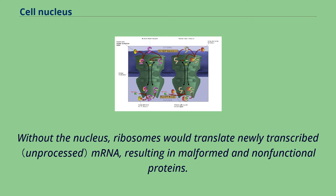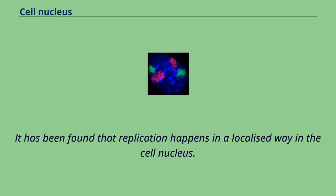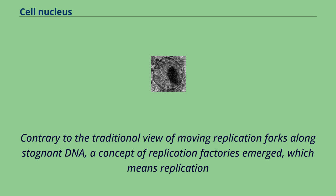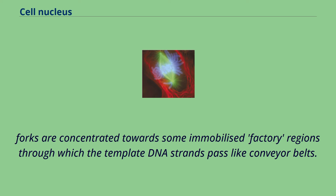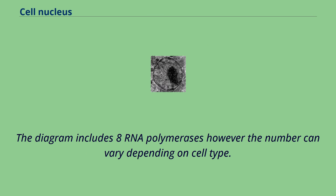The main function of the cell nucleus is to control gene expression and mediate the replication of DNA during the cell cycle. Replication happens in a localized way in the cell nucleus. In the S phase of interphase, replication takes place. Contrary to the traditional view of moving replication forks along stagnant DNA, a concept of replication factories emerged, in which replication forks are concentrated towards some immobilized factory regions through which the template DNA strands pass like conveyor belts. A generic transcription factory during transcription highlights the possibility of transcribing more than one gene at a time, with RNA polymerases, transcription factors, and a porous protein core.